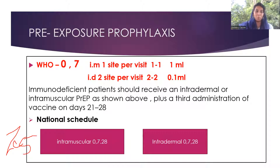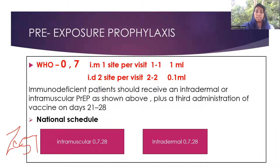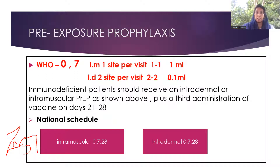Zero is for day zero, S is for the seventh day, and T is for the twenty-eighth day dosage. We can give it either as intramuscular or intradermal. Intramuscular is one site per visit — the patient comes on day zero, gets vaccinated, goes home, and comes back on the seventh day for another shot. Intradermal is two sites per visit — when they come you vaccinate at two different sites, and again on the seventh day at two different sites. For immunodeficient patients, WHO recommends an additional dose at twenty-eight days. The national schedule still recommends a three-dose schedule: zero, seven, and twenty-eight.